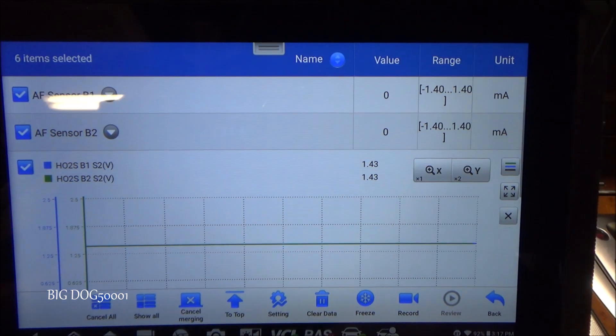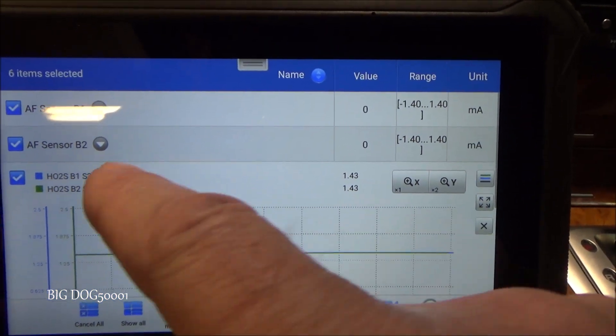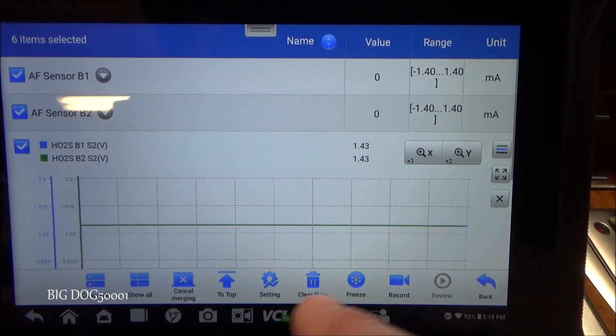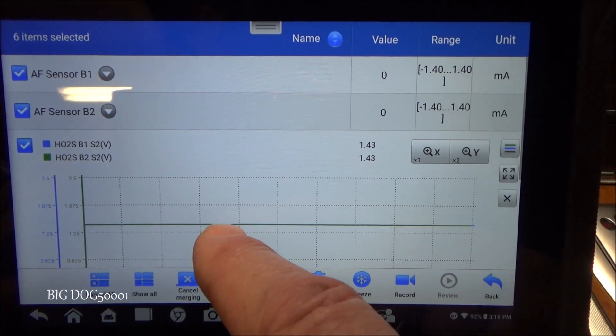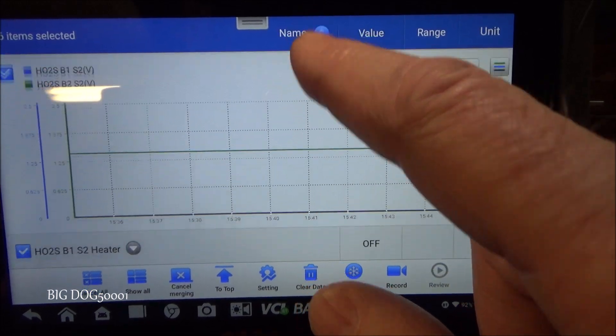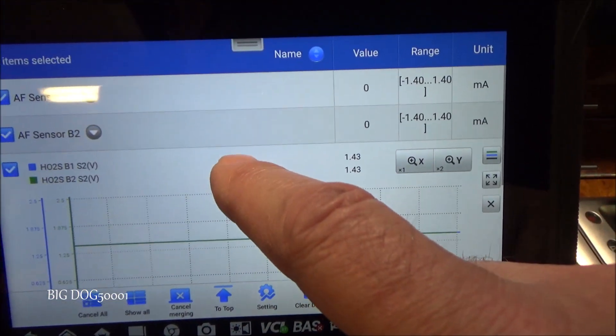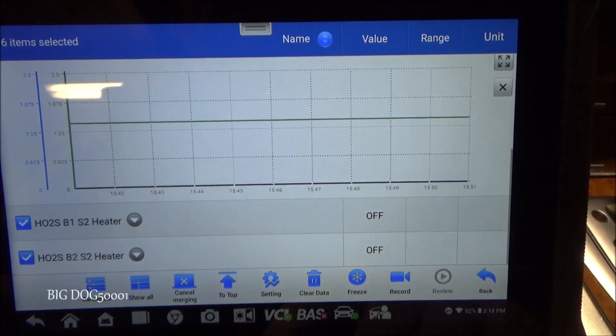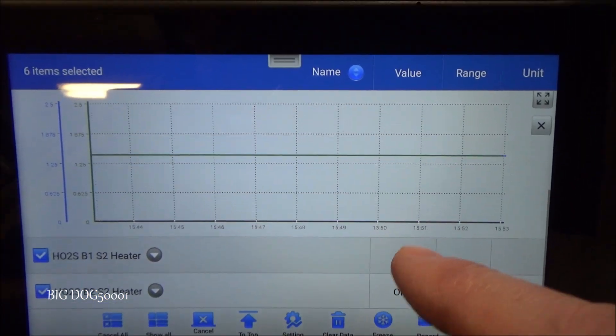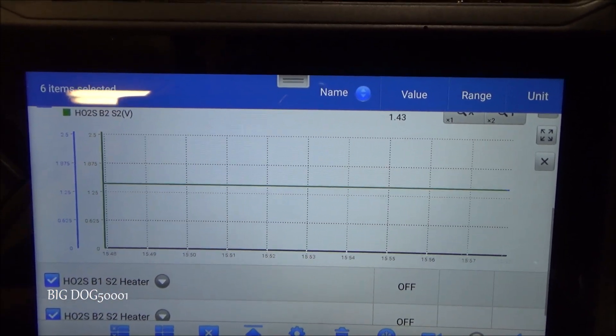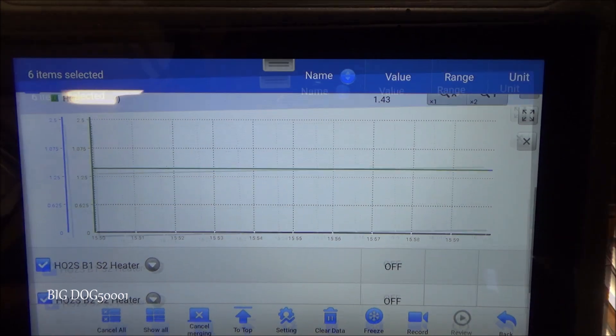I went ahead and merged the graph. So I have both oxygen sensors graphed and they're both merged. So this line right here represents both of them. But we can only see one because they're one on top of each other. And then we have our heaters. So most likely we'll be watching this for the most part because I want to see the heater amperage and what our two oxygen sensors do as the vehicle heats up.